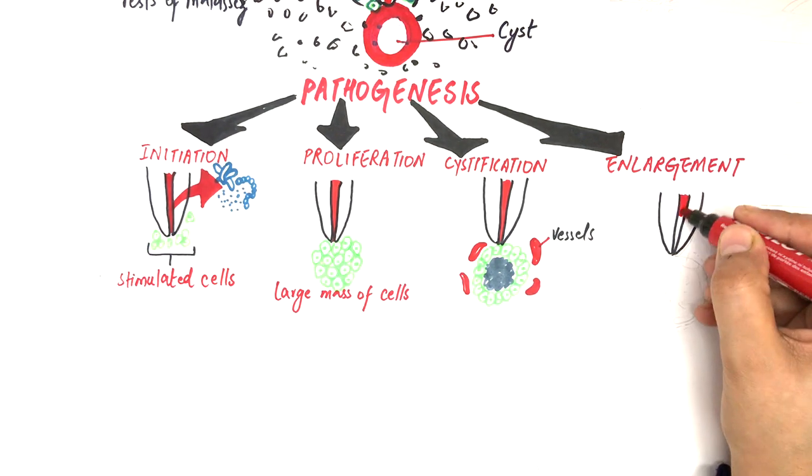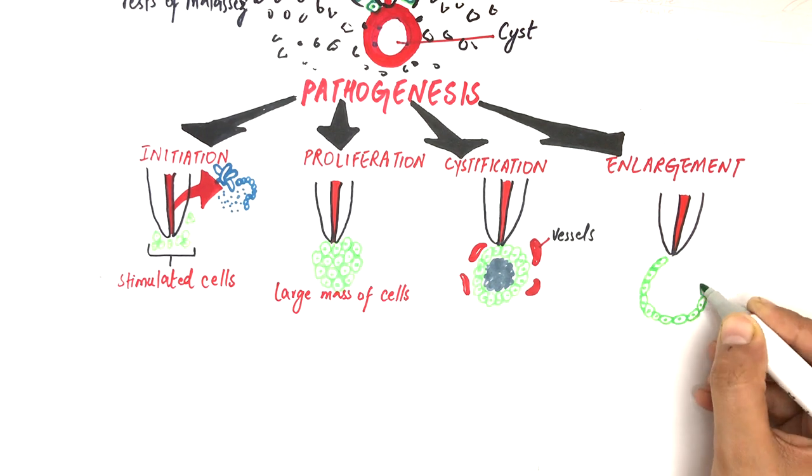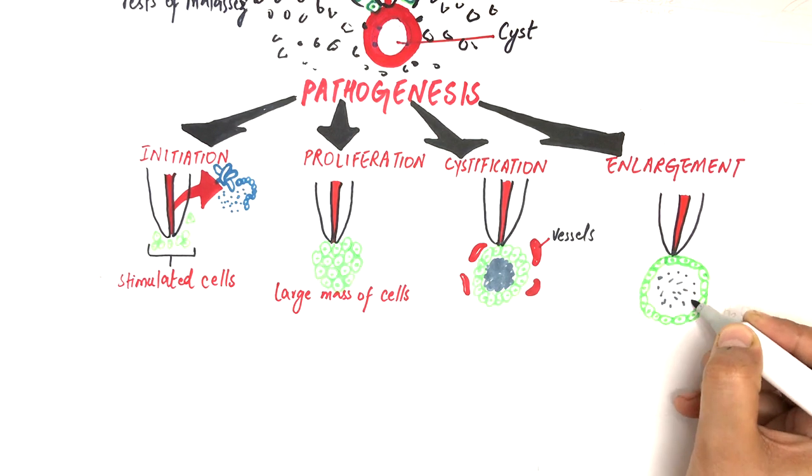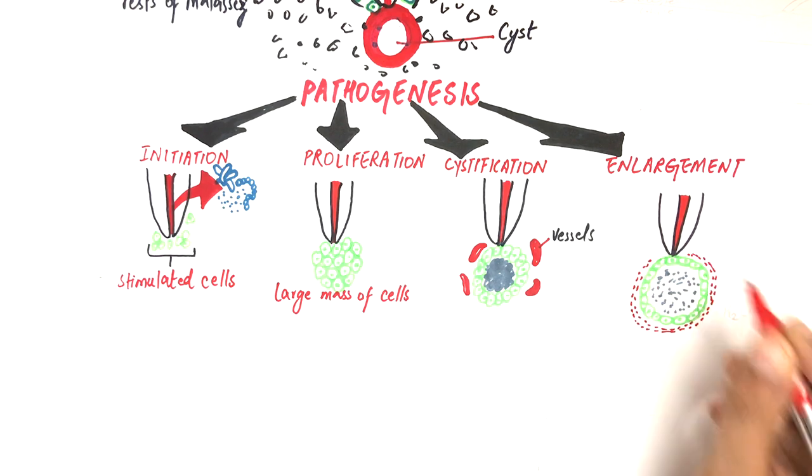In the enlargement phase, the degraded central cells lead to a high osmotic pressure within the cystic lumen. This high osmotic pressure within the cystic lumen results in absorption of further fluid from surroundings into the cystic lumen.